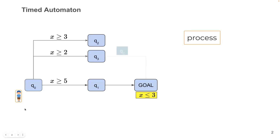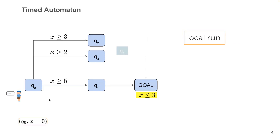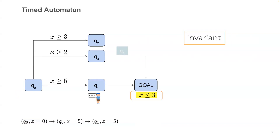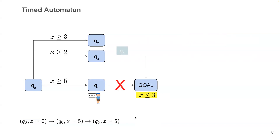Consider a timed automaton in which a process wants to reach the location 'goal'. The process has a local clock variable x initiated to zero, and its behavior is captured by the local run depicted at the bottom of the slide. To take the transition to q1, the process has to satisfy the clock constraint x ≥ 5, so it must delay at least five units. However, before going to 'goal', it violates an invariant on 'goal' which limits x to at most three, so the process cannot reach 'goal' in this case.